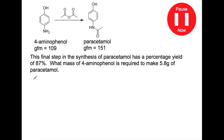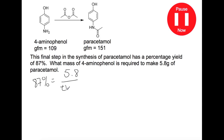This question looks at the final step in the synthesis of paracetamol. We use 4-aminophenol with ethanoic anhydride to produce paracetamol and ethanoic acid. This synthesis has a percentage yield of 87%, and we're trying to work out the mass of 4-aminophenol required to make 5.8 grams of paracetamol. Starting with the information from the question: 87% is our percentage yield, the actual yield is 5.8 grams, and we don't know the theoretical yield. Rearranging for theoretical yield gives us 5.8 divided by 0.87.